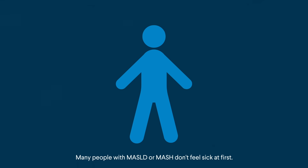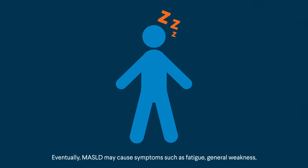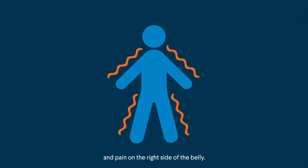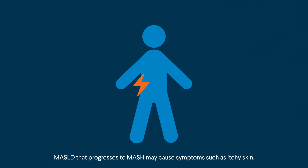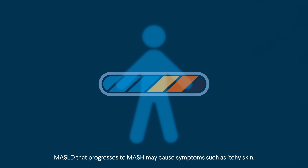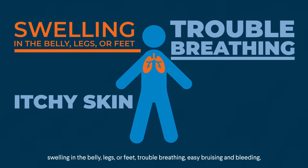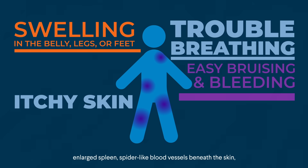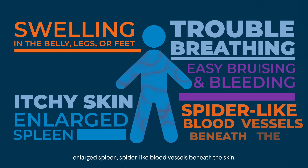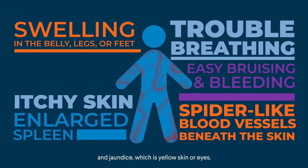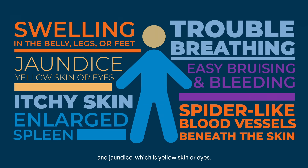Many people with MASLD or MASH don't feel sick at first. Eventually, MASLD may cause symptoms such as fatigue, general weakness, and pain on the right side of the belly. MASLD that progresses to MASH may cause symptoms such as itchy skin, swelling in the belly, legs, or feet, trouble breathing, easy bruising and bleeding, enlarged spleen, spider-like blood vessels beneath the skin, and jaundice, which is yellow skin or eyes.